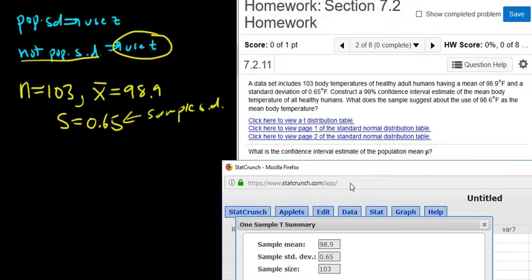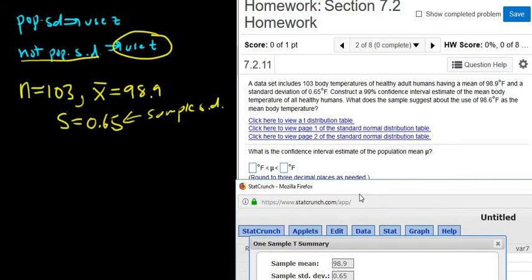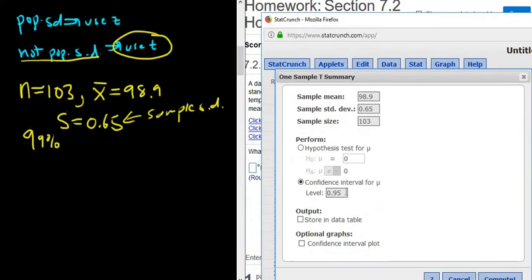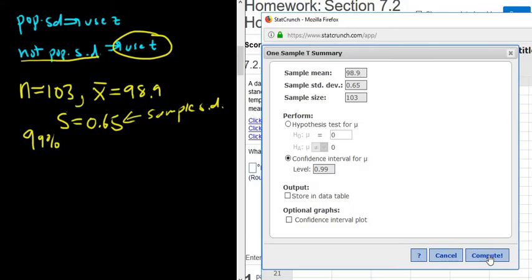Oh, I forgot to read about the confidence level. There it is right there, 99. I somehow missed that. I guess I stopped reading the question once I found all the numbers. It wants a 99% confidence interval estimate of the mean body temperature of all healthy humans. So change this to 99 and click compute.